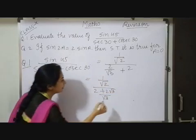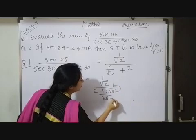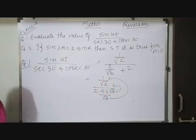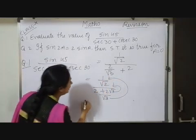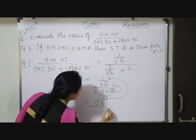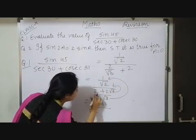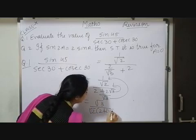Now as we know, second and third in the numerator multiplied together and fourth and first will be multiplied together. So here I have 1 into root 3 will be root 3 upon root 2 into 2 plus 2 root 3.